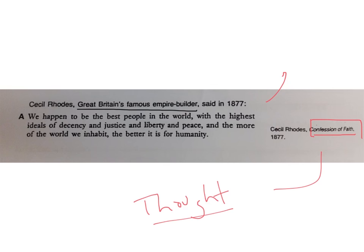So, we can probably surmise from this that he believes what he's writing. He's thought about it. This is actually what he thinks about the world. Origins, we know where it's come from. It's come from Cecil Rhodes. We know he's Great Britain's famous empire builder, so we know that he's a well-known person. Well-known enough so that his thoughts have obviously become a book. All right, so that's the Origins.